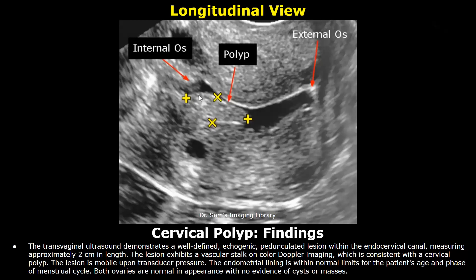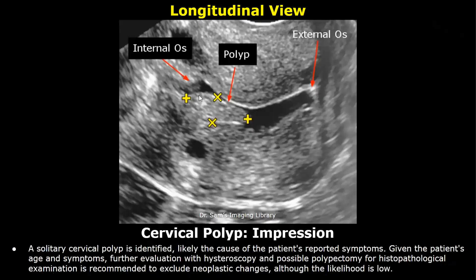The lesion is mobile upon transducer pressure. The endometrial lining is within normal limits for the patient's age and phase of menstrual cycle. Both ovaries are normal in appearance with no evidence of cysts or masses. Impression: a solitary cervical polyp is identified, likely the cause of the patient's reported symptoms. Further evaluation with hysteroscopy and possible polypectomy for histopathological examination is recommended to exclude neoplastic changes.